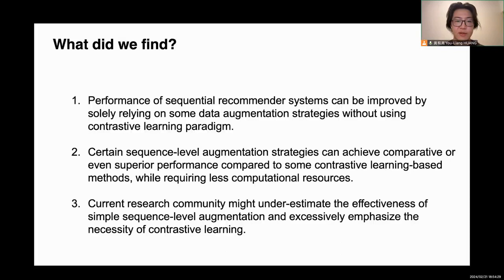We find the performance of the sequential recommender system can be improved by solely relying on data augmentation strategies without using the contrastive learning paradigm. Second, we find certain sequence-level augmentation strategies can achieve comparative or even superior performance compared to some contrastive learning-based methods, while requiring less computational resources. Finally, we believe the current research community might underestimate the effectiveness of simple sequence-level augmentation and excessively emphasize the necessity of contrastive learning.